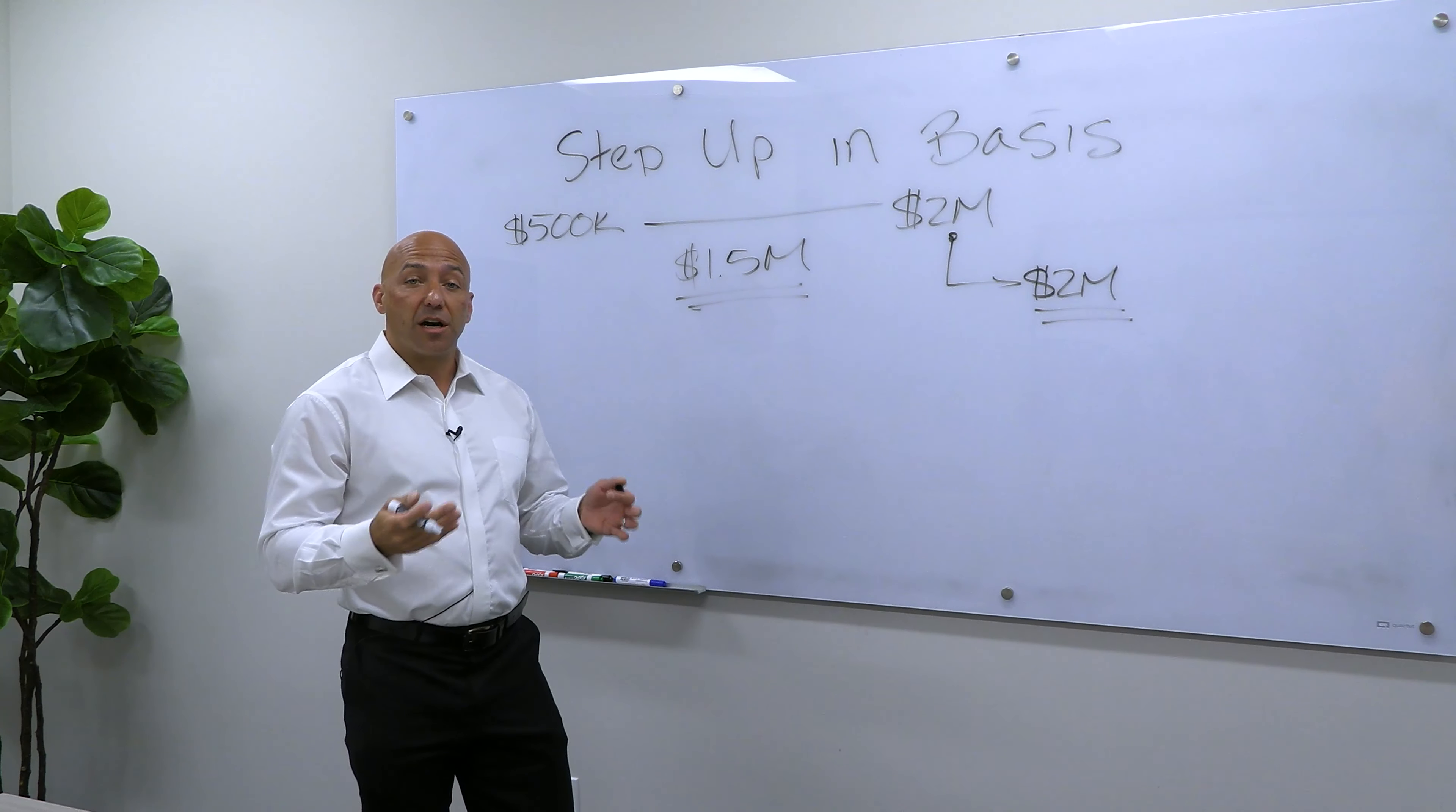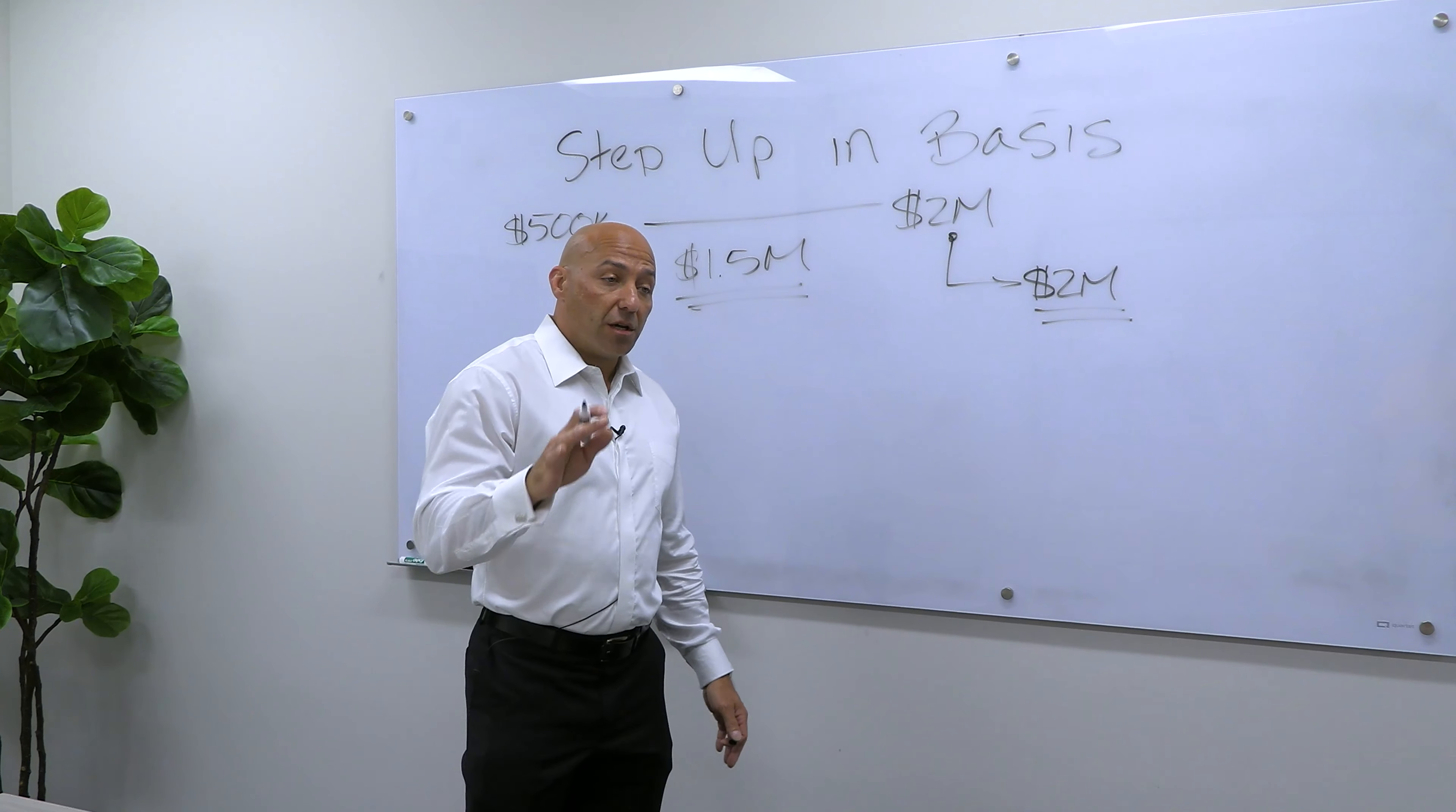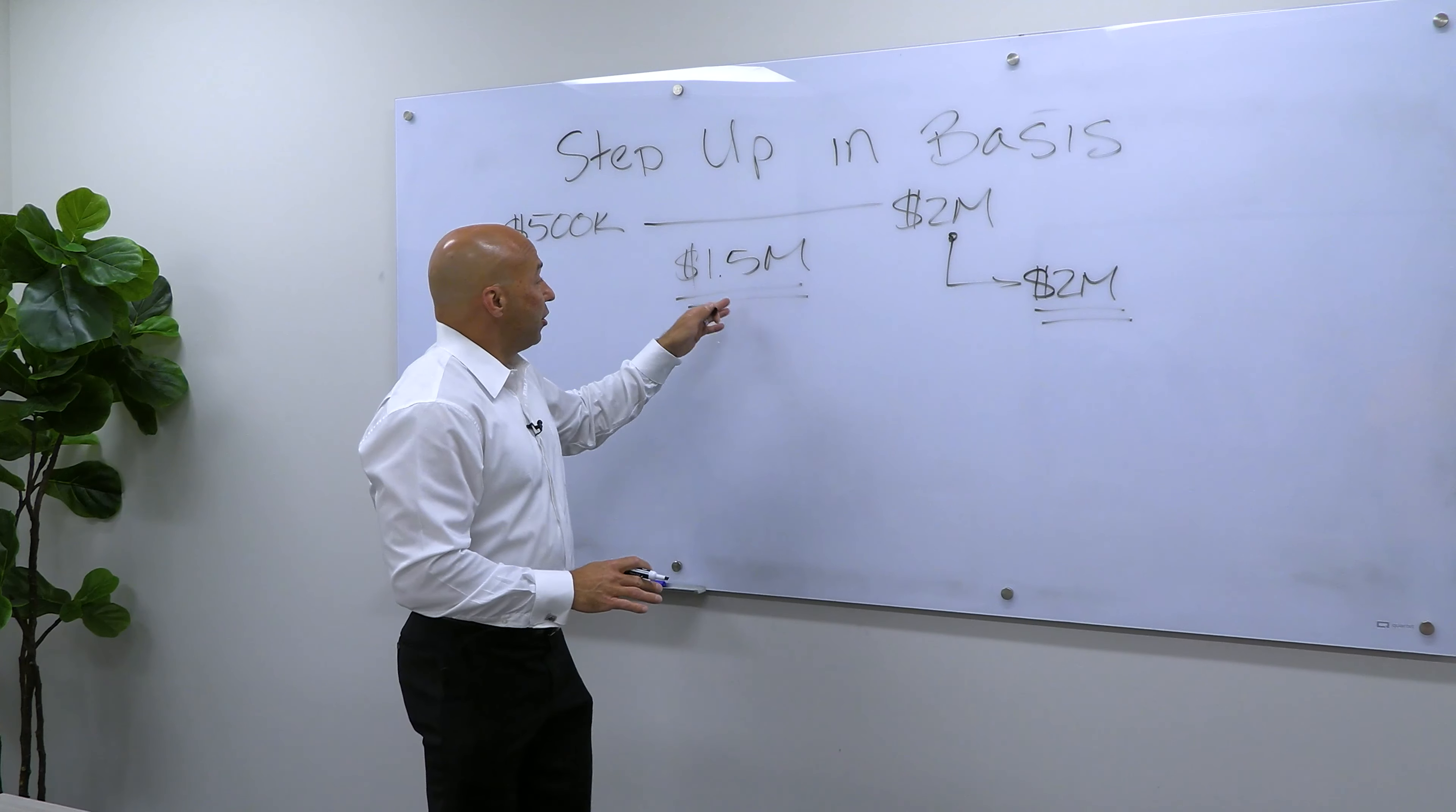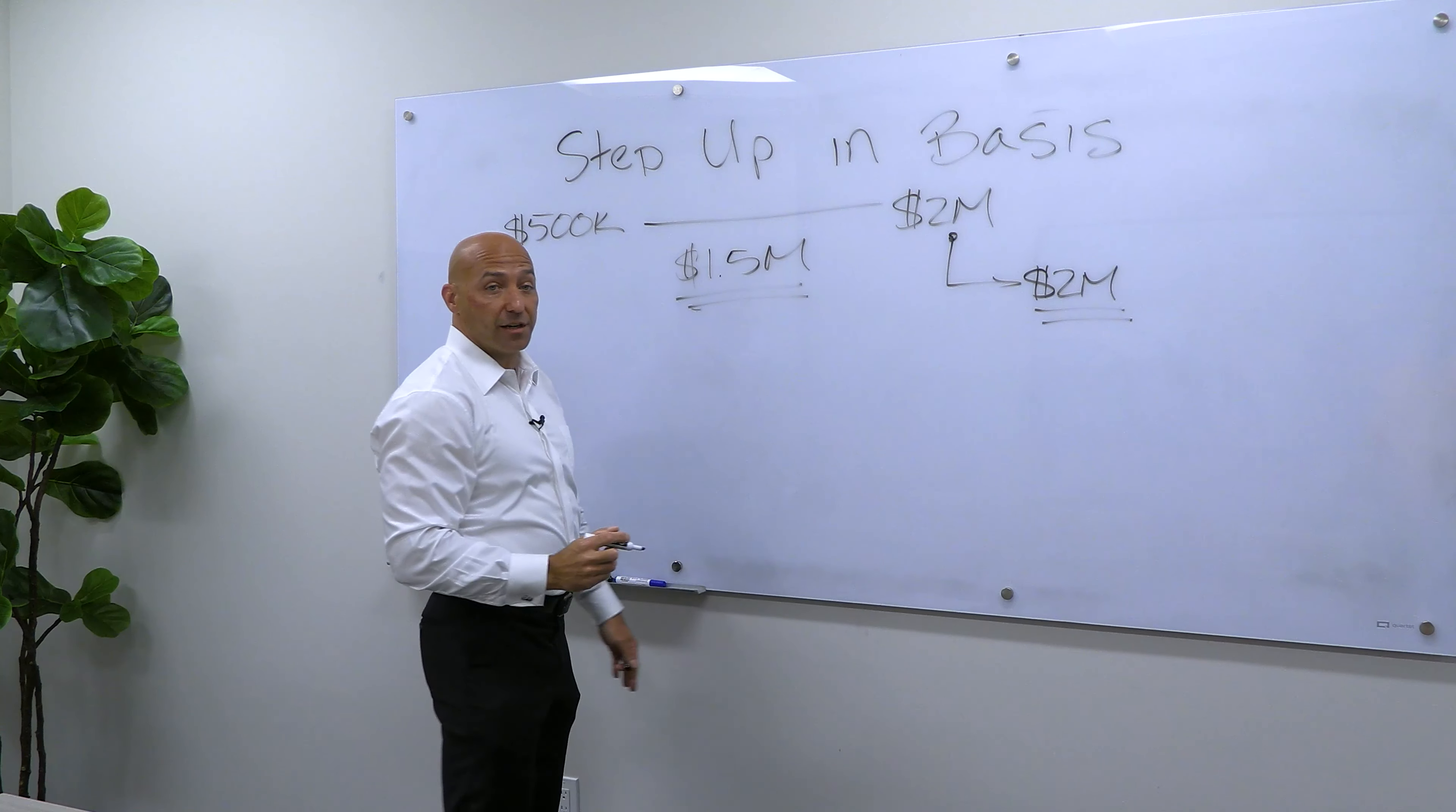President Biden has talked about a couple of different options or ways that he might want to change this in the future. And one of them that he first talked about was eliminating this all together, no step up in basis, which if that were to occur, you would now have $1.5 million in gains and you would owe taxes on this entire amount here.